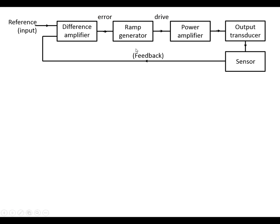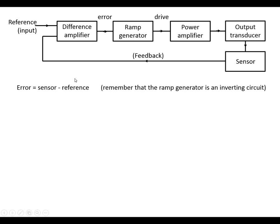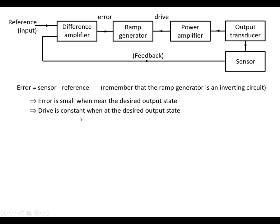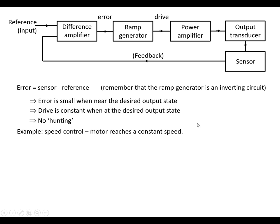Now looking at what happens when we put a ramp generator in: in this case I've swapped over the reference and the sensor voltages because the ramp generator is an inverting circuit, so when this is positive the drive output is going to ramp downwards. In both cases, as with the previous case, the error is going to be small when we're near the desired output state, but in this case the drive is going to be constant — not necessarily zero — when we're at the desired output state, but again it means we get no hunting. An example of this could be a motor speed control where the motor reaches a constant speed.